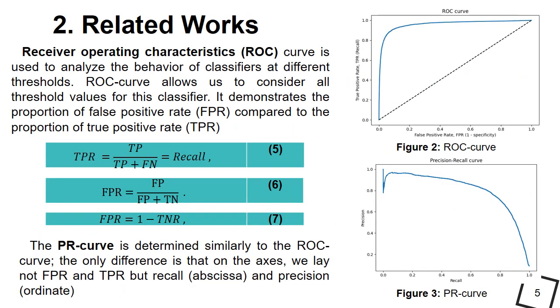The Receiver Operating Characteristic curve is used to analyze the behavior of classifiers at different thresholds. It demonstrates the problems of false positive rate compared to the proportion of true positive rate. See Figure 2.